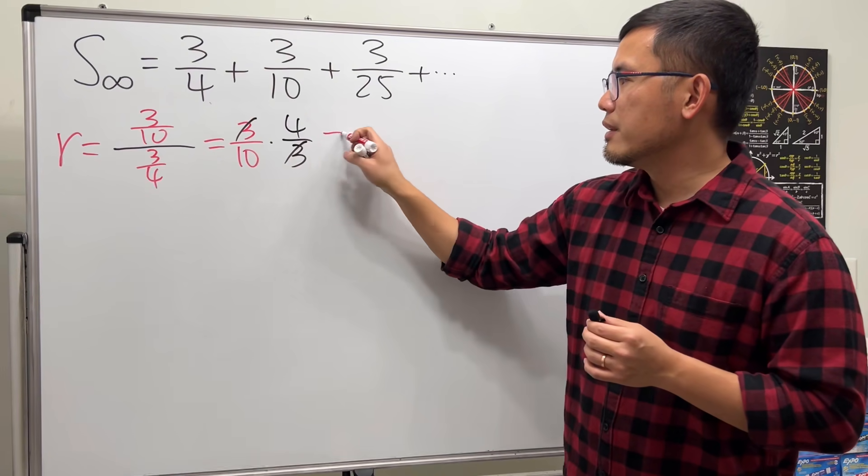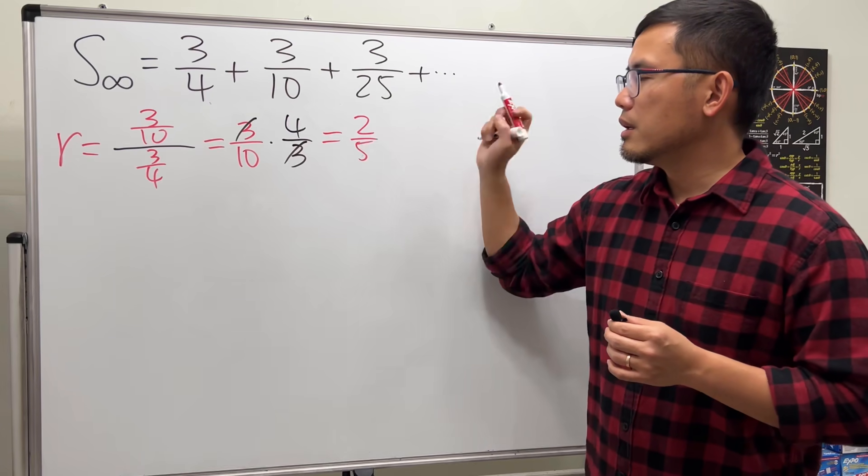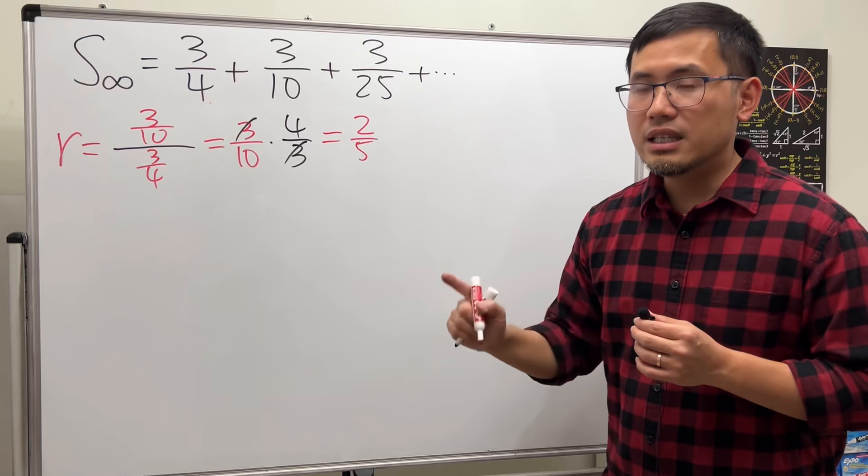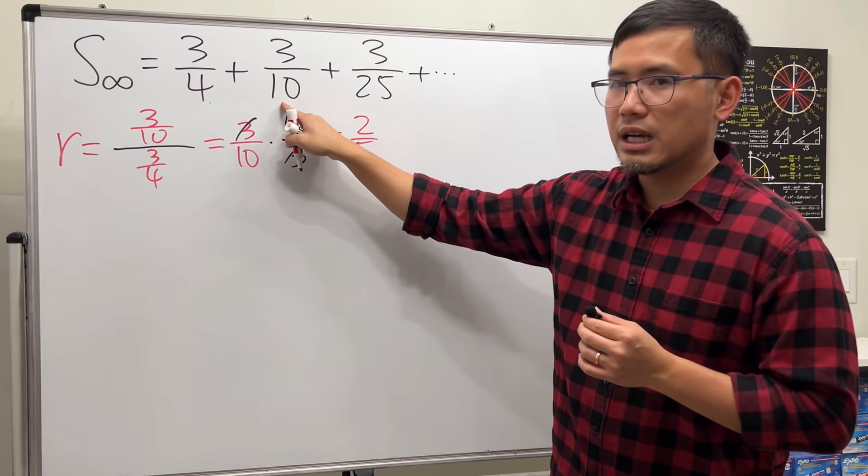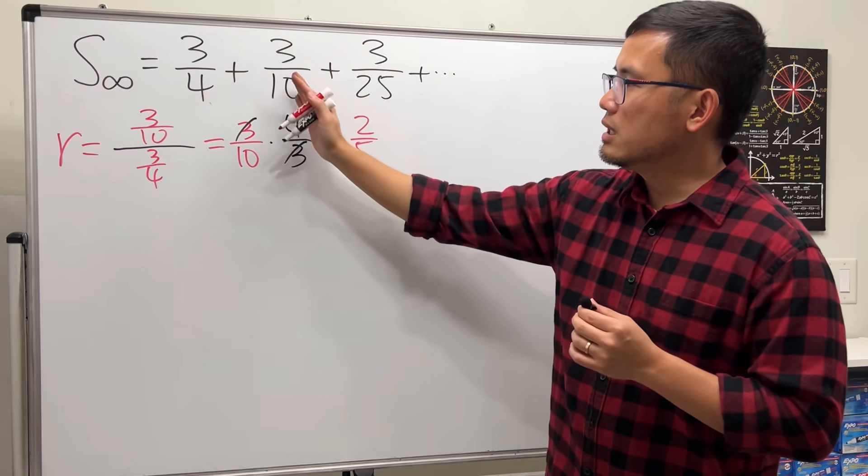But you also have to make sure that this is indeed the common ratio. To do so, you do this divided by that. You do this divided by that - just pick a term and divide it by the previous.